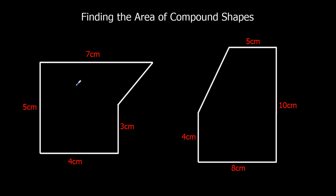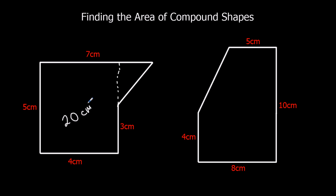Let's have a look at this first question. If we cut up here, we've got a rectangle and we've got a triangle, and we can work out the area of those. Looking at the rectangle, we've got 5 as the height and the width is 4. So the area of the rectangle is 5 times 4, which is 20 centimeters squared.